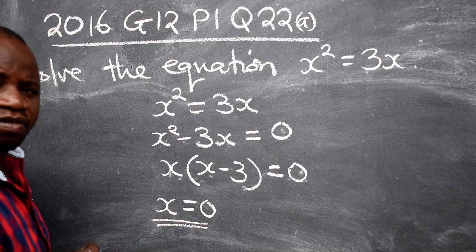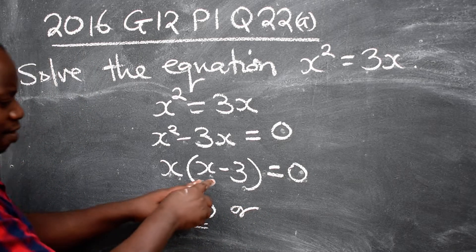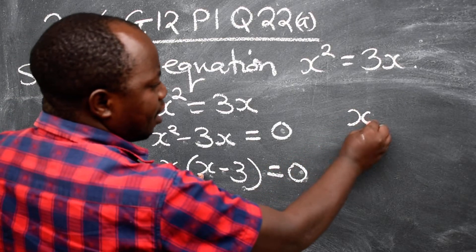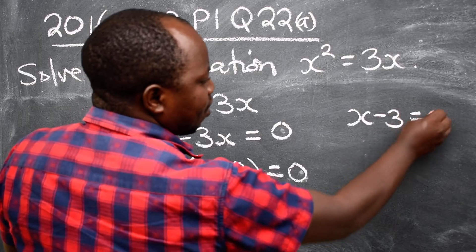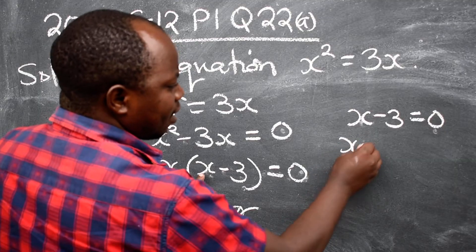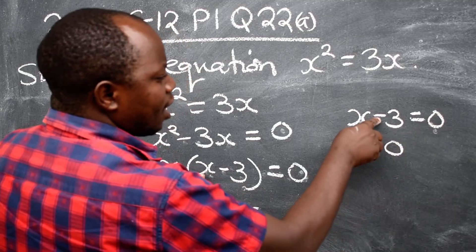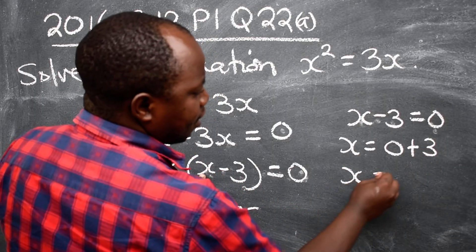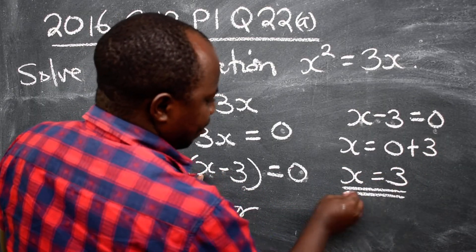Or the other value will now be x - 3 = 0. So right here, x - 3 = 0. So solving this, negative 3 will be positive 3, then x = 3.